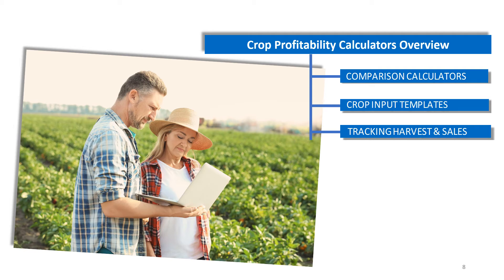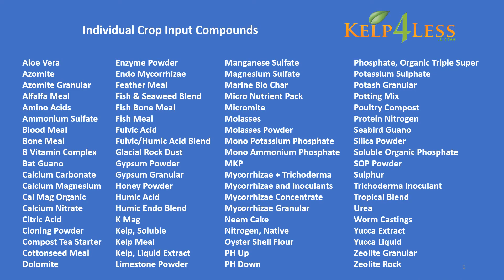Individual crop input compounds are what underpin fertilization and plant and soil amendments. It is quality in these compounds that creates crop inputs that are effective. With nature providing the raw materials, the key is to use them at the right time, under the right circumstances, in the right amounts, and in the right combinations.